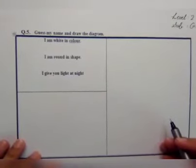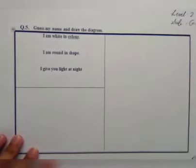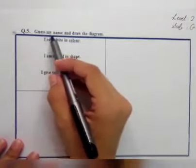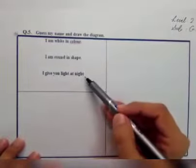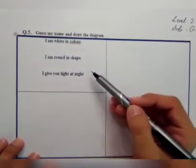Assalamualaikum students, how are you all? Hope you are fine. Today we are here for studying a remedy pack of level 2 subject GK. So open page number 29. Here is question number 5: guess my name and draw the diagram. Here are three statements. First of all we can read it, then guess their name, and then draw their diagram.